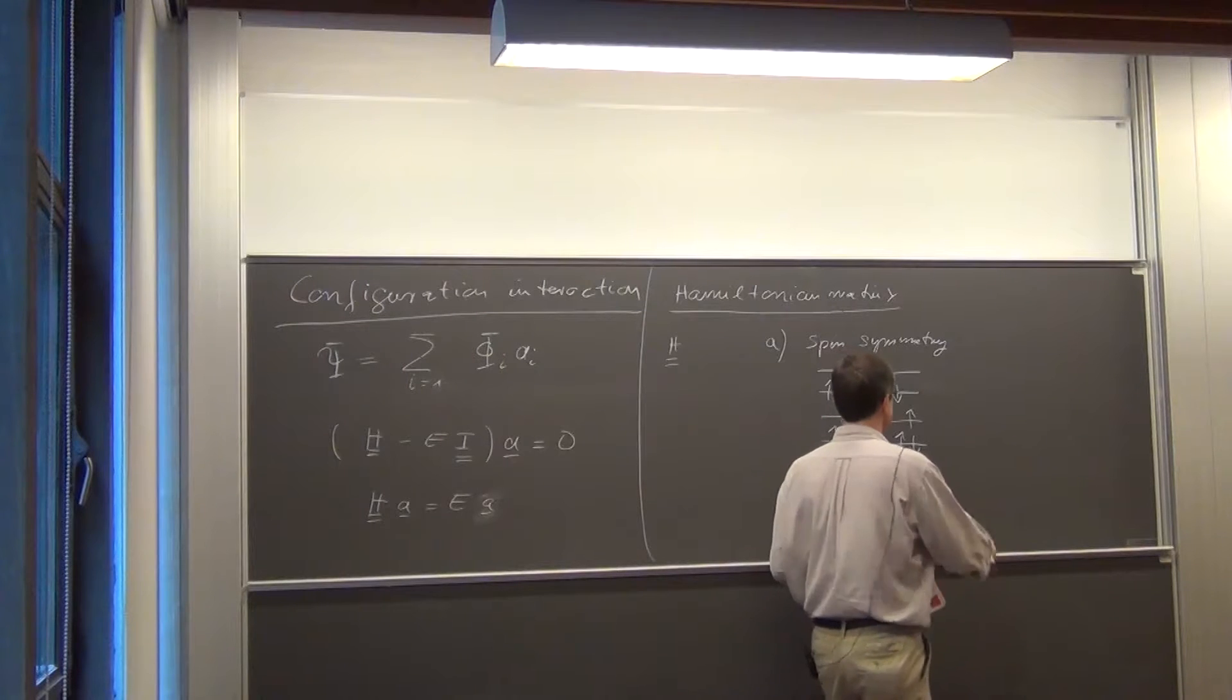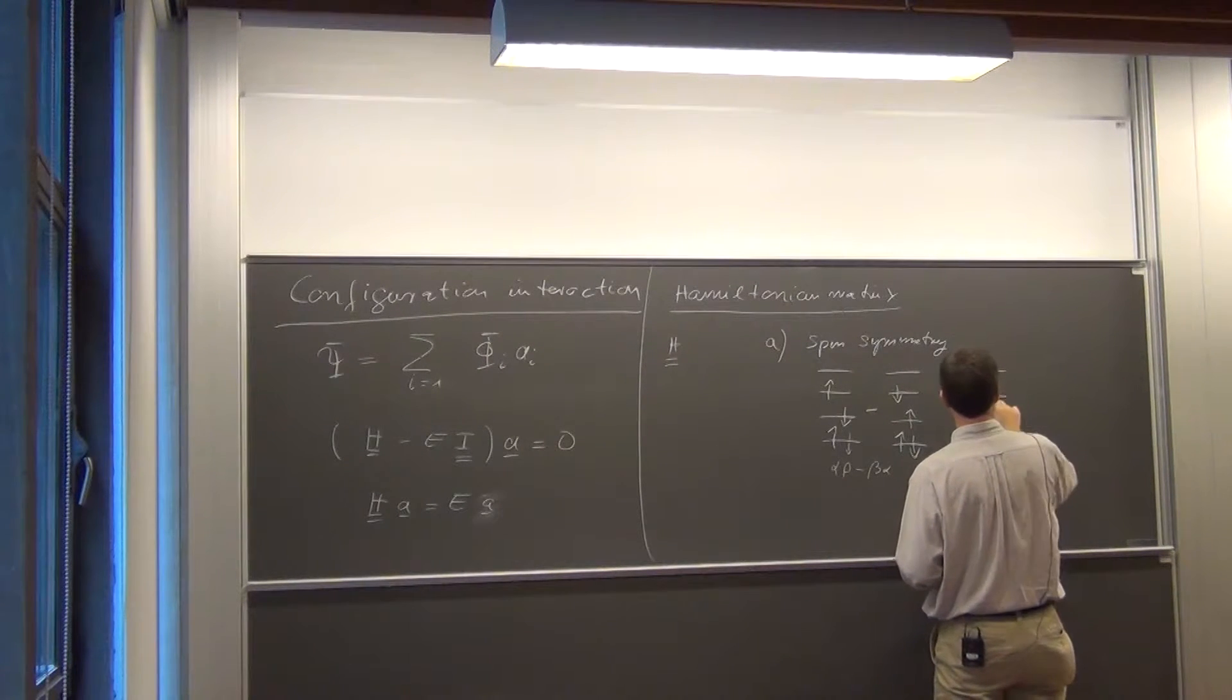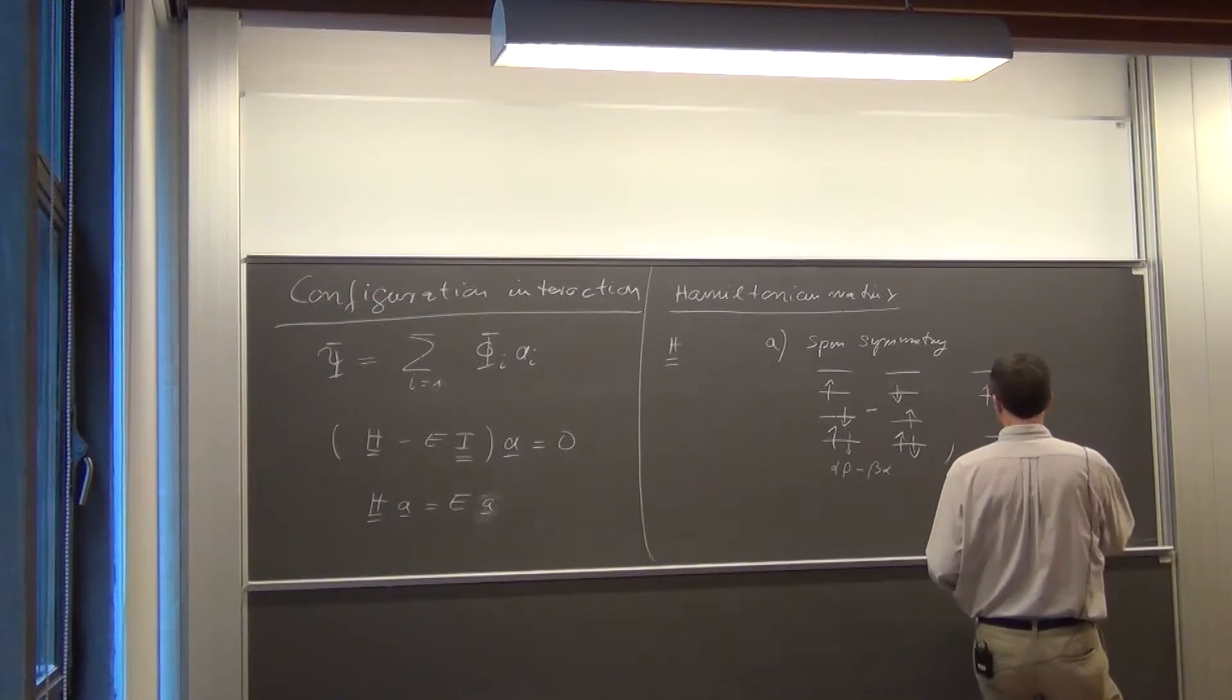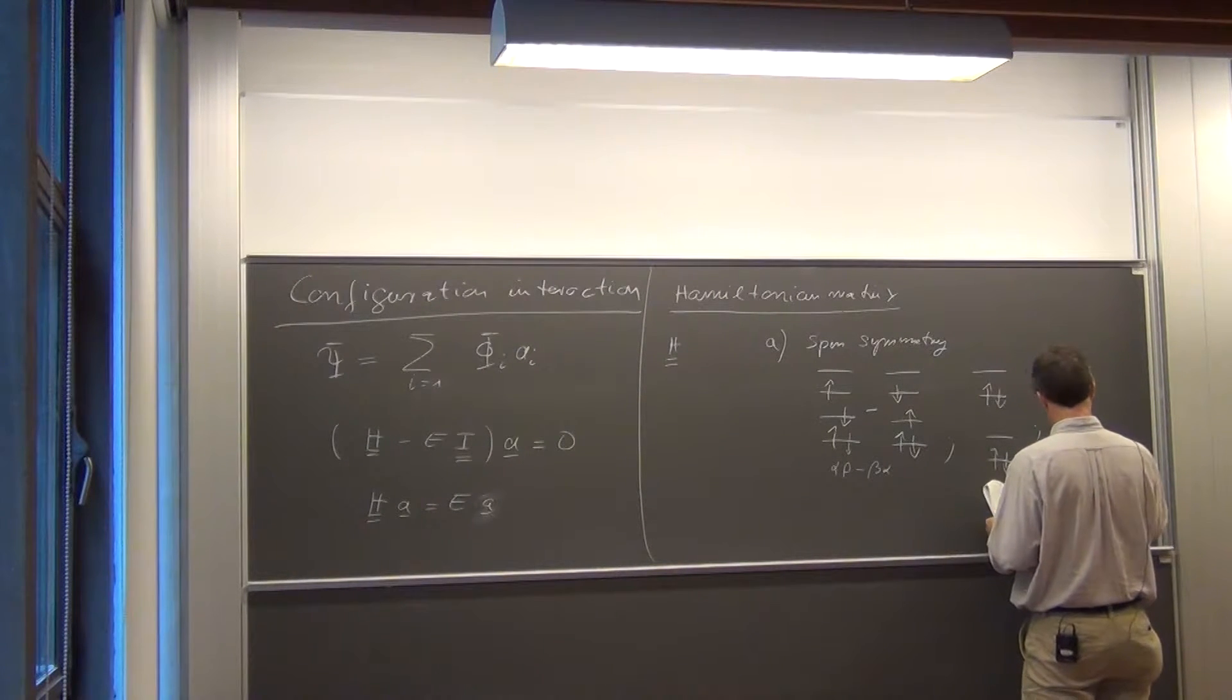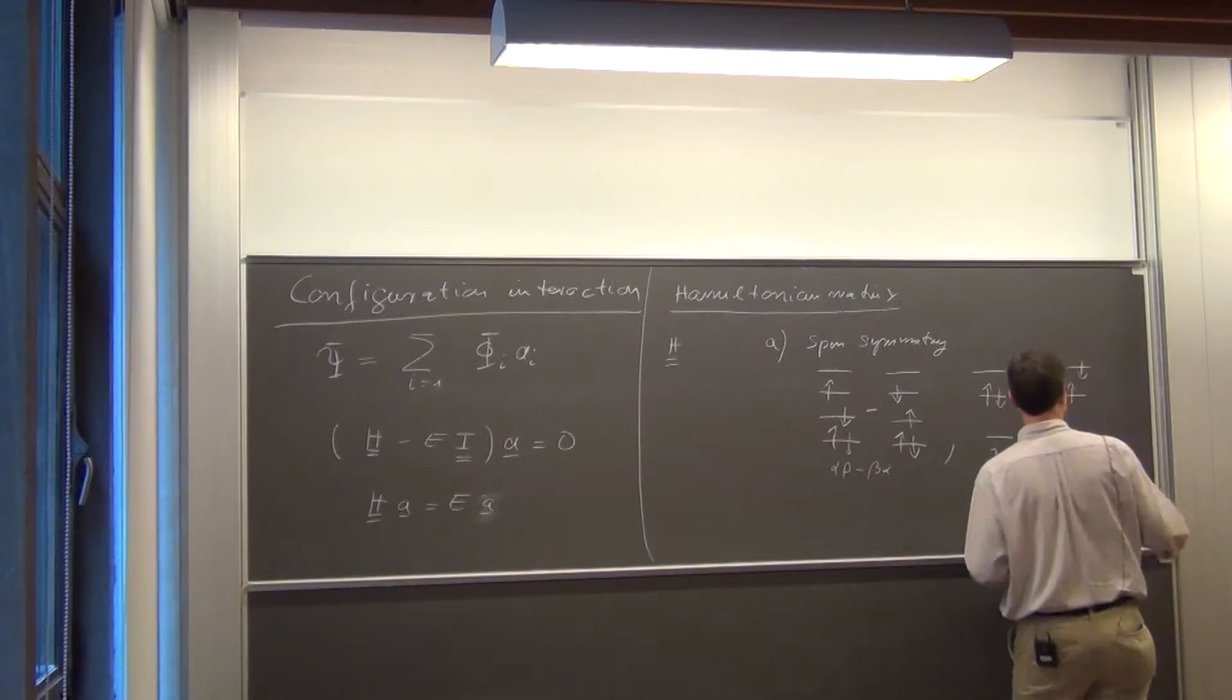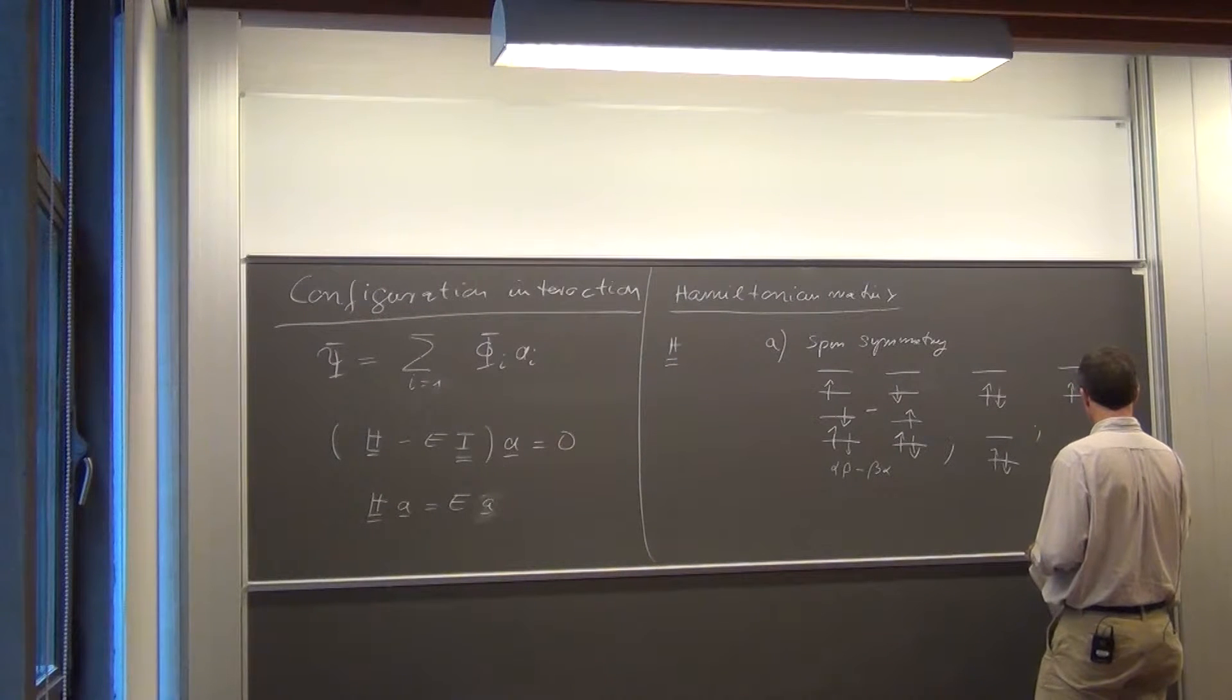For a double excited determinant, take the same again. So if you would like to have something like some kind of double excited ones, where I have something like this. That's one possibility. As far as I remember, there are five more.